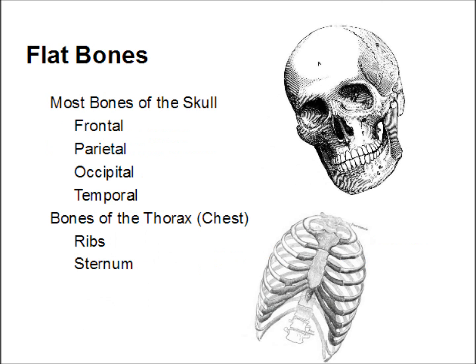Next, we have flat bones. Flat bones provide protection for our internal organs, and include the bones of the skull, and the bones of the thorax, or chest.